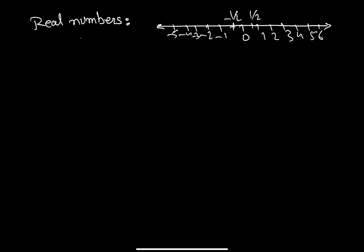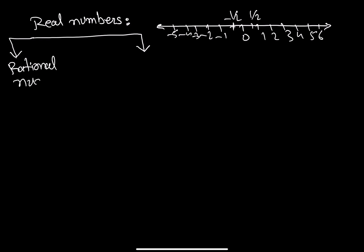Real numbers are categorized into subdivisions. Let's make a diagram here. There will be rational numbers and irrational numbers.